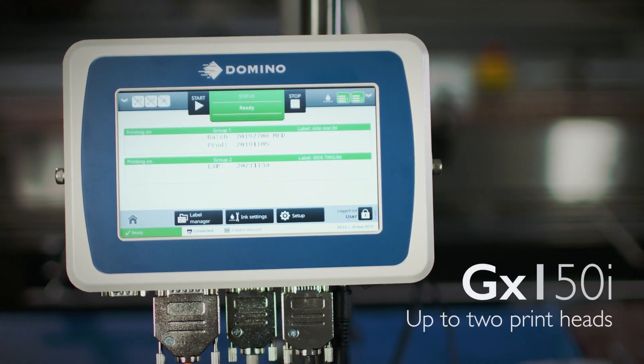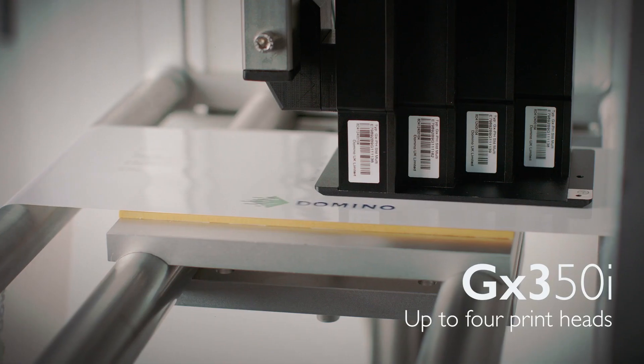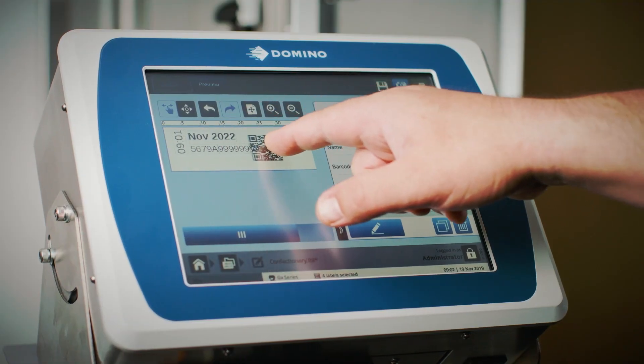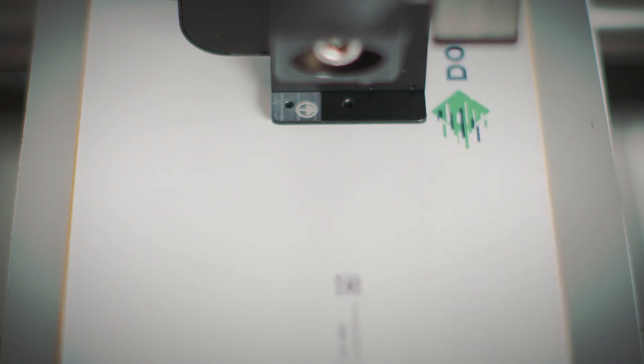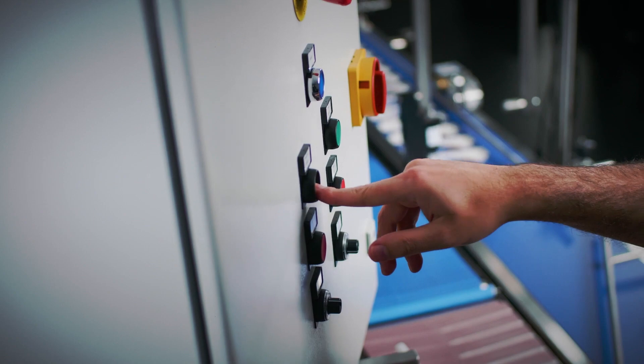Effortlessly run the GX150i and GX350i through their easy to use feature-rich touchscreen interface. You can create and edit labels directly on board. The GX OEM completely and seamlessly integrates with production machinery.